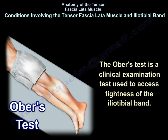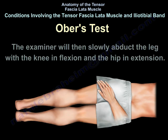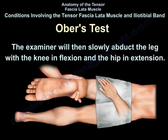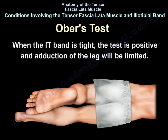What is the OBER's test? The OBER's test is a clinical examination test used to assess tightness of the iliotibial band. The patient should lay on their side with the unaffected leg on the bottom. The examiner will then slowly abduct the leg with the knee in flexion and the hip in extension. When the iliotibial band is tight, the test is positive and abduction of the leg will be limited.